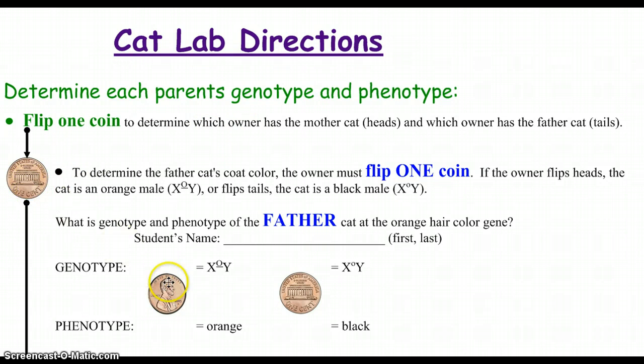I have went ahead and put in heads and tails, just more of a visual aid for you. What you'll first do, whoever the father cat is, we need to determine what color of coat you will have. So you're going to flip just one of the coins. You will each have a penny. If the dad flips a head, then you're going to write for the orange cat an X, Y, because that's for male. And to show orange, we have a superscript O.